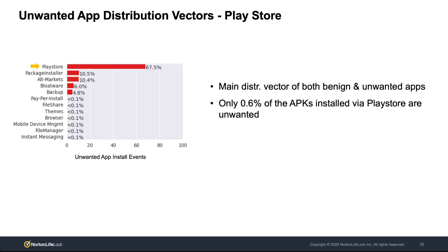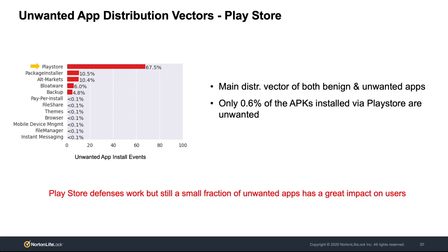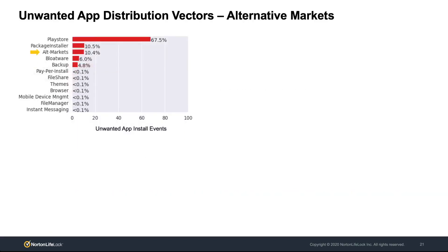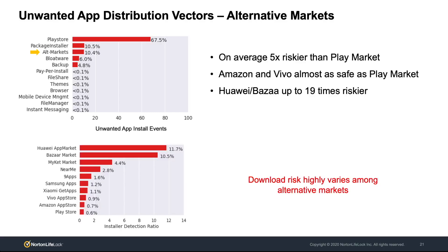The second largest vector is the package installer, for which we cannot identify the exact unwanted app. The third, very close, are alternative markets, responsible for 10% of the unwanted app installations in our dataset. Interestingly, on average, installations coming from alternative markets are five times riskier than those from the Play Store. However, this risk really varies depending on the alternative market. For example, there are markets like Amazon and Vivo that can be almost as safe as the Play Store, but markets like Huawei and Bazaar can be up to 19 times riskier.